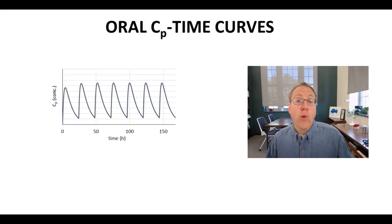On the screen is a graph. This graph shows the relationship between plasma concentration, CP, and time for an orally administered drug with once daily doses and multiple doses.